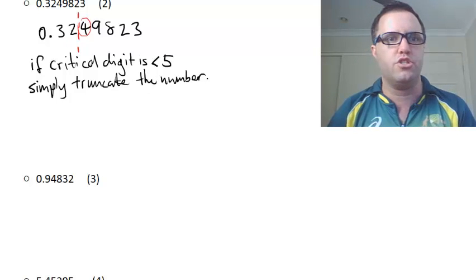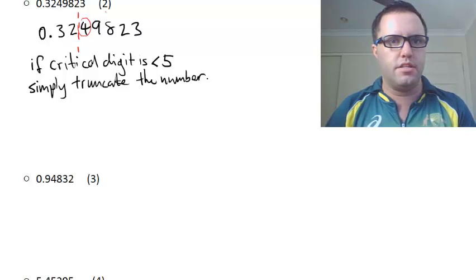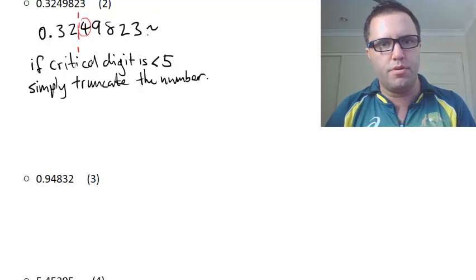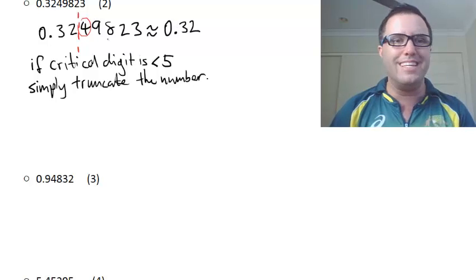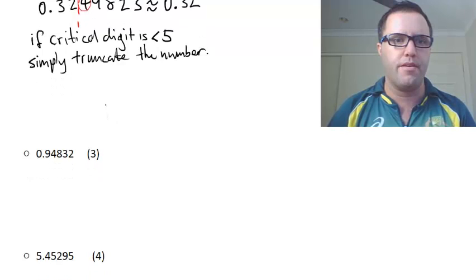If it's less than five, simply truncate the number. Truncate means just chop it there. So we've got that number there, and we're just going to truncate it, which means just chop it off where we want to round to. So that will be approximately equal to 0.32. Now, importantly, it doesn't matter that there is a nine or an eight here. All we're concerned about is this four.